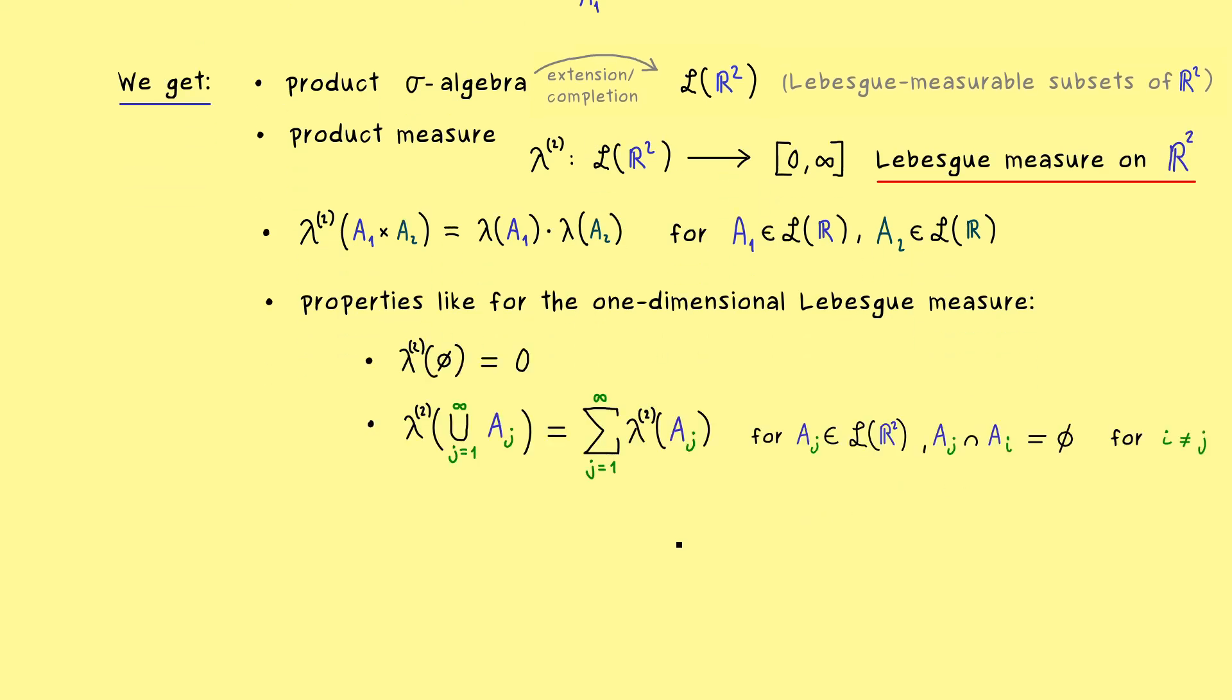So we can just quickly recall them. First we have the two properties for a general measure. So the empty set has area zero and we have the sigma additivity.